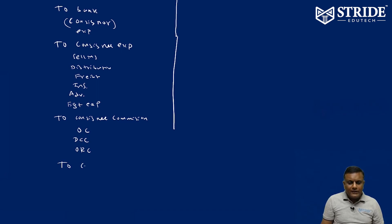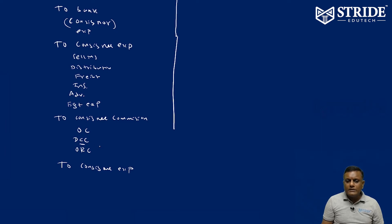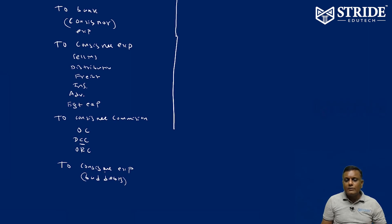Next, consignee expenses. Suppose del credere commission is given to the consignee — the consignee will have to bear all bad debts. If del credere commission is not given, the consignor will have to bear the bad debts. Here, bad debts are posted, which means del credere commission was not given to the consignee, so the consignor bears the bad debts.